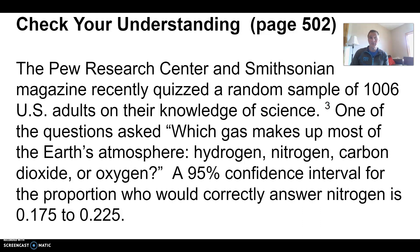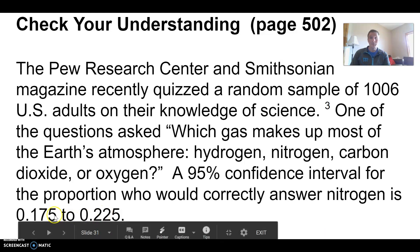If people were just guessing, we would expect 25% to get it right. However, a 95% confidence interval for the proportion who would correctly answer nitrogen is only 0.175 to 0.225.